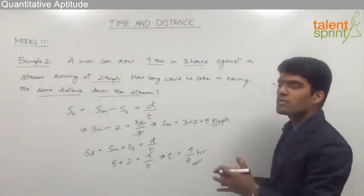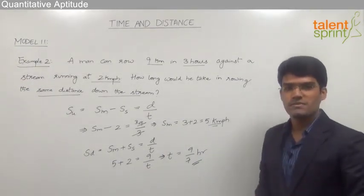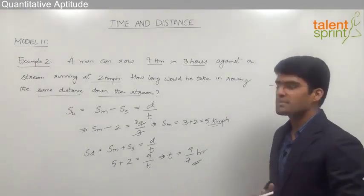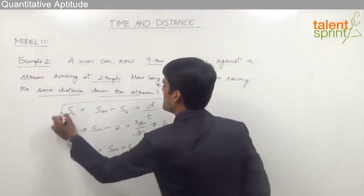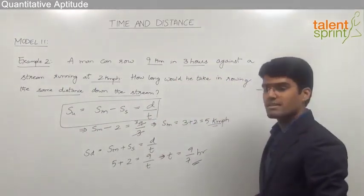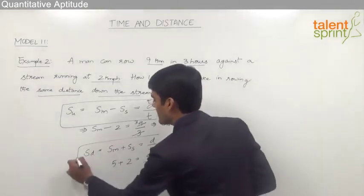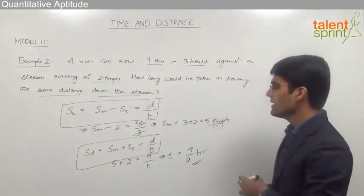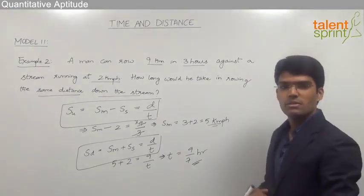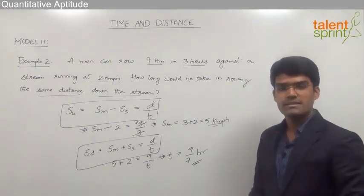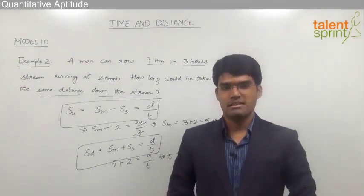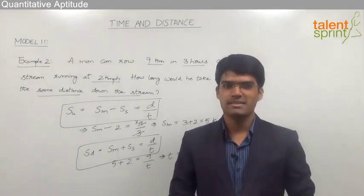As you can see, solving questions from boats and streams is straightforward — we simply apply the correct equation, either upstream (speed of man minus speed of stream = distance / time) or downstream (speed of man plus speed of stream = distance / time), and find the missing variable. These are the various concepts generally asked from time and distance. That's all from this topic; see you in the next session.